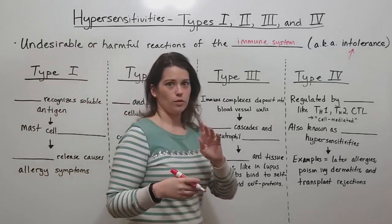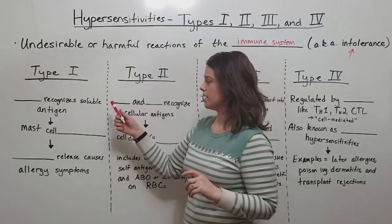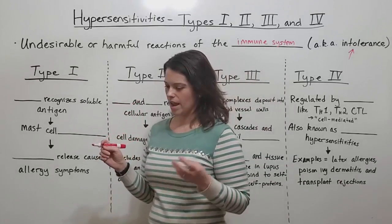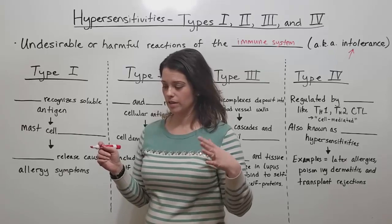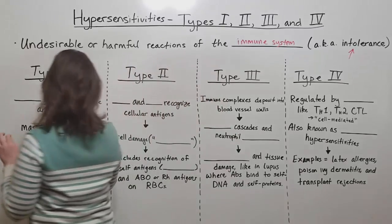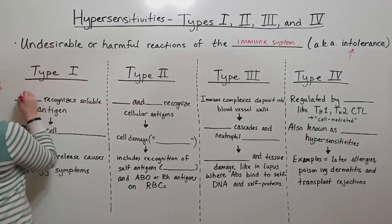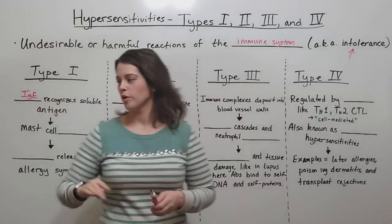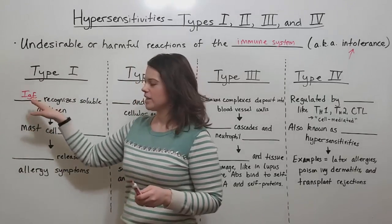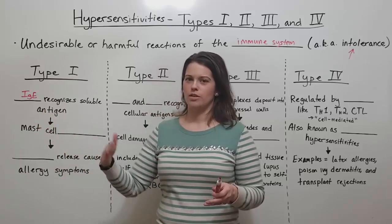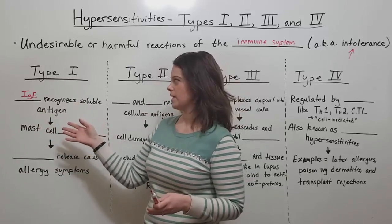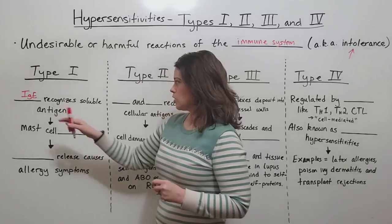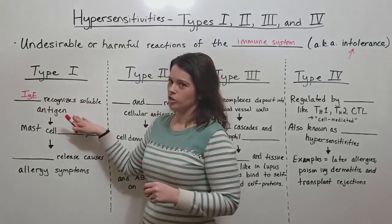Now let's talk about those four different types, starting with type 1. Type 1 hypersensitivities are when a specific antibody, specifically IgE, recognizes soluble antigen. Remember that IgE stands for immunoglobulin, which is another name for antibody. IgE is one of the major types of antibodies, and here it recognizes soluble antigen.